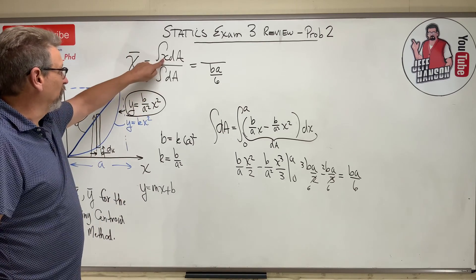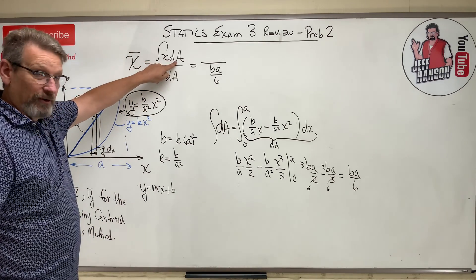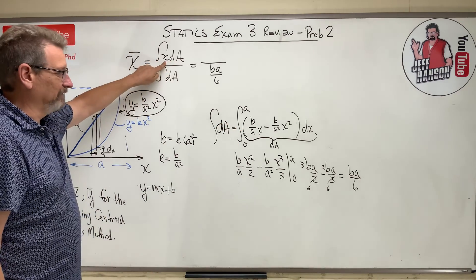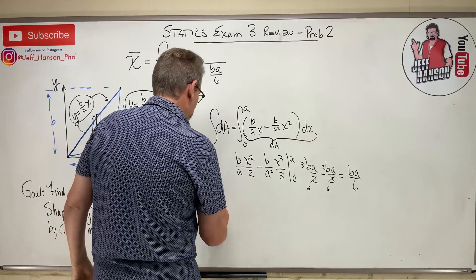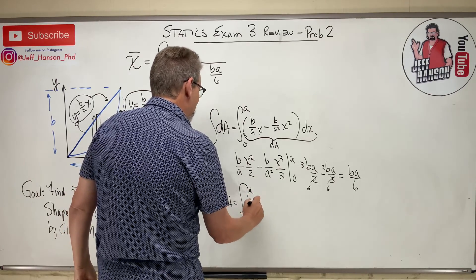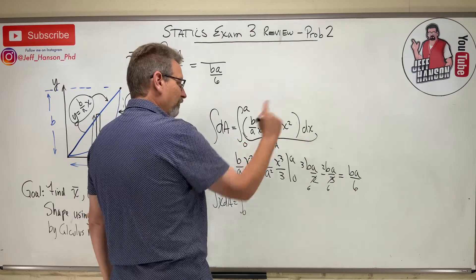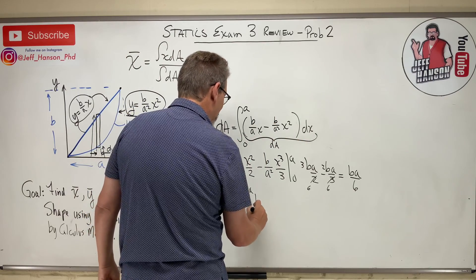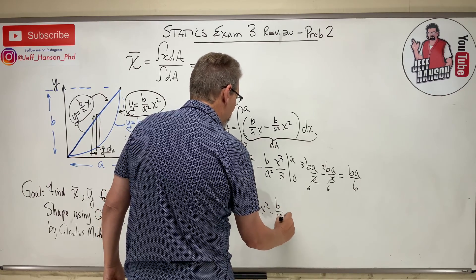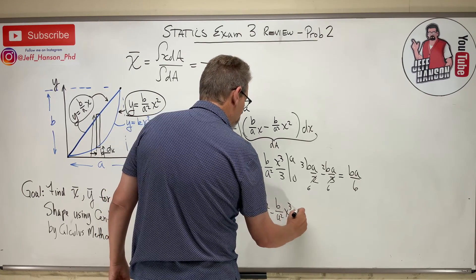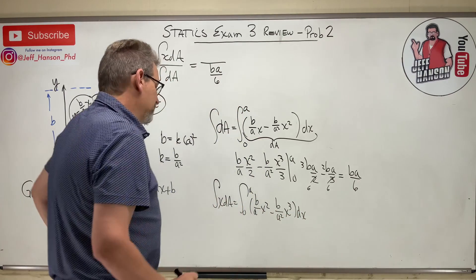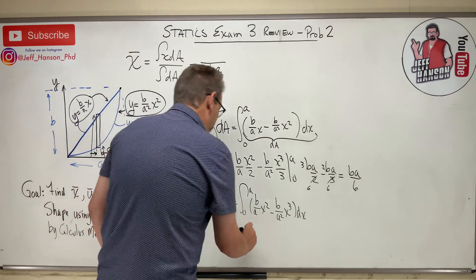So that goes on the bottom down here. Nice and easy there, right? So there's the integral of dA. This is unintegrated dA right there, isn't it? That's where it was. So what's on the top of the equation? Well, it's dA, unintegrated dA, it's that guy, times X. Dude, we can do this. So the integral of X dA is the integral from zero to A, I'm multiplying this whole thing through by X, B over A, X squared minus B over A squared, X cubed dX.